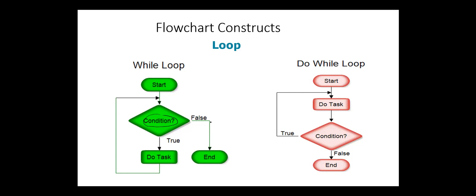While in the do-while construct, a group of statements are executed, and at the end the condition is tested. If the condition is true, we repeat executing this group of statements, otherwise we exit the loop. So in the do-while construct, this block of statements will be executed at least once.